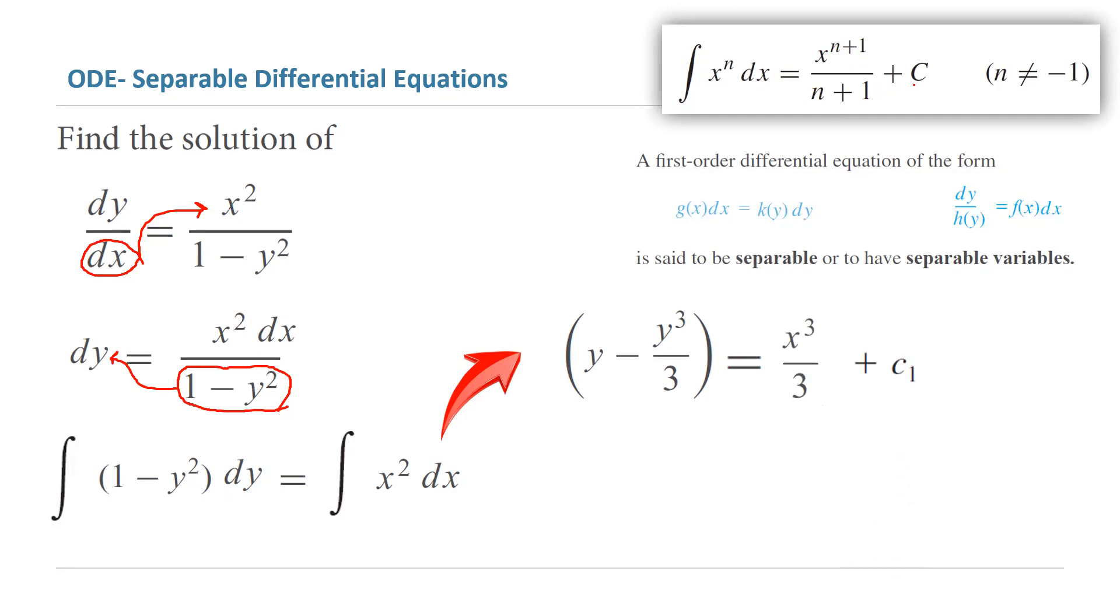Now let us do a little bit of algebra. Multiply everything by 3. So y minus y cubed divided by 3 is multiplied by 3. On the other side, you get x cubed divided by 3 multiplied by 3. And you have to multiply the constant by 3 as well. Let us simplify this. You get 3y minus y cubed. And on the other side, you have x cubed plus 3c sub 1.